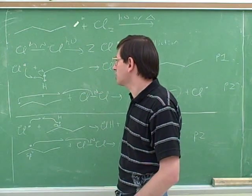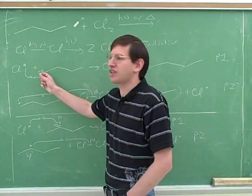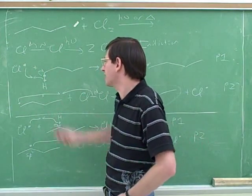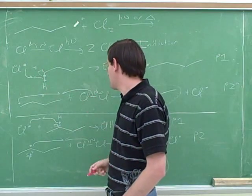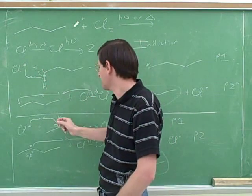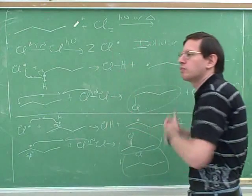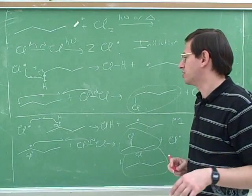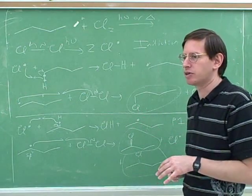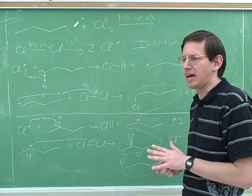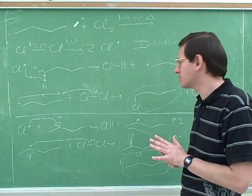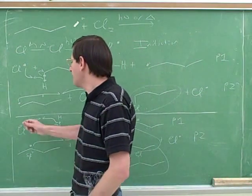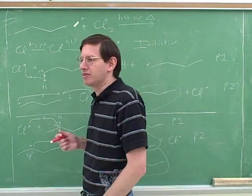Statistically speaking, just based on chance, chlorine is more likely to encounter and take a terminal hydrogen. So we have two competing arguments: based on statistics, the terminal hydrogen is more likely to be taken; based on radical stability, the internal secondary hydrogen is preferred. Which one wins depends on the mathematics of the situation — sometimes you'd have to work out the math. However, some halogens are more selective than others.